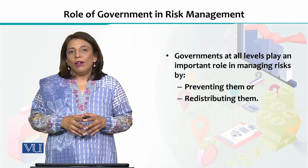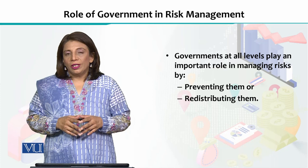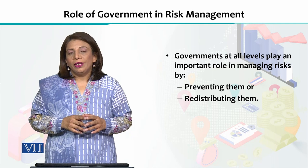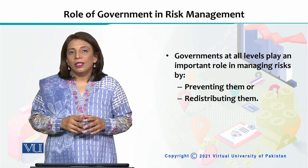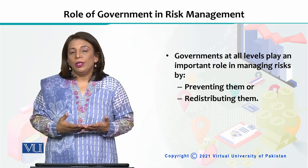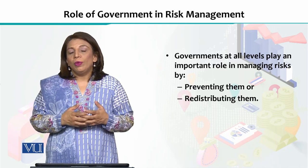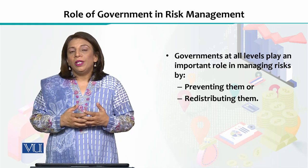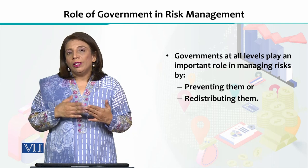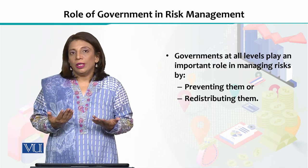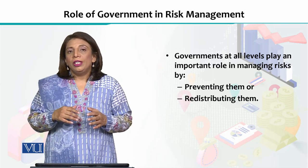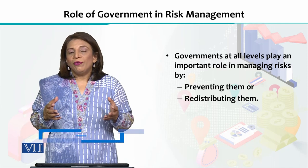In order to have a better understanding of the risk management process, we need to look at how the government is going to help us in mitigating the various types of risks. Whether I am a business, a household, or an individual customer, what are the ways through which the government can help me in mitigating the risks to which I am exposed? I can be a firm or an individual — a household or a firm exposed to different types of risks.